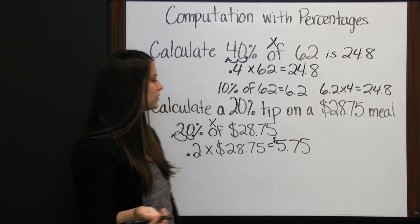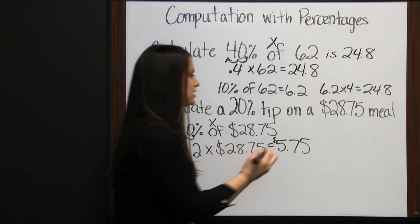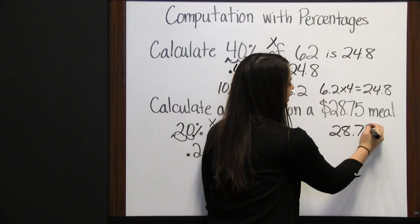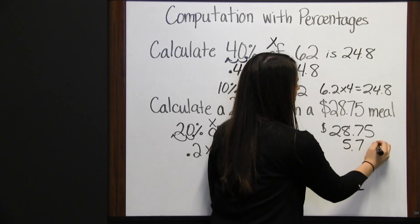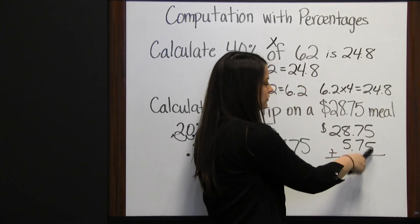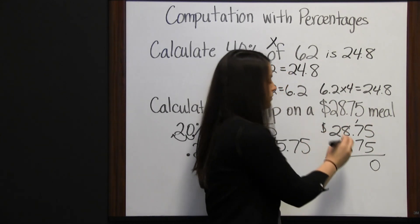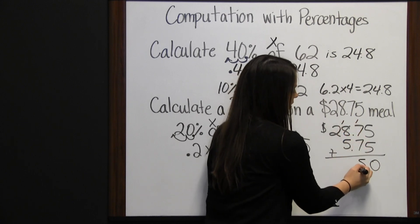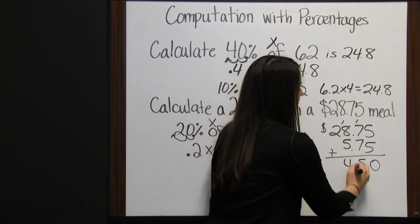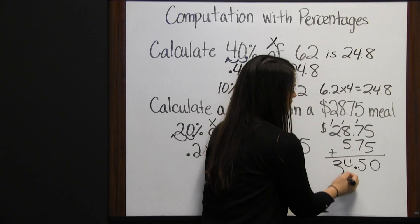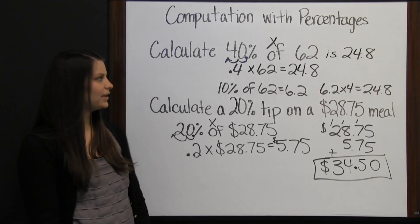What would our total bill be? Our total bill is how much our food costs plus how much we're leaving in tip. So $28.75 plus $5.75. Five plus five is ten, write zero, carry one. Seven plus seven is fourteen, plus one is fifteen, carry one, bring down the decimal. Eight plus five is thirteen, plus one is fourteen, write four, carry one. Two plus one is three. So our total bill would be thirty-four dollars and fifty cents with the tip included.